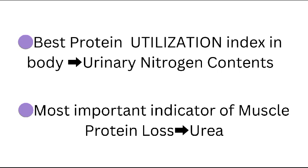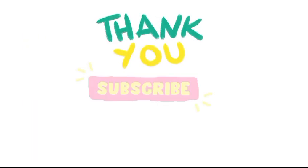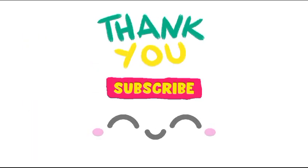The best protein utilization index in the body can be found by measuring urinary nitrogen content, and the most important indicator of muscle protein loss can be found by measuring urea.